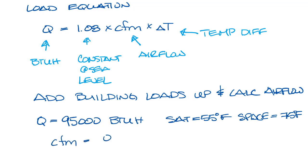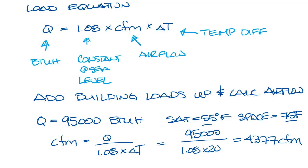So from the load equation, we know that CFM will equal Q divided by 1.08 times delta T, which is 95,000 divided by 1.08 times 20. And that comes out to 4,377 CFM. So you'd need about 4,400 CFM to handle the load of the space using 20 degree delta T air.